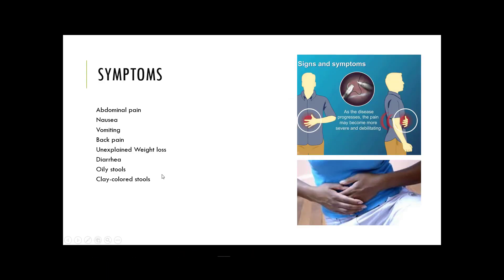The most common symptom of pancreatitis is upper abdominal pain. In fact, pain is the overriding symptom for 85-90% of people with chronic pancreatitis. This pain can be constant or occur in week-long episodes and is often associated with nausea and vomiting. For many people, it spreads to the back and worsens after eating or drinking, potentially causing them to fear eating and drinking, resulting in weight loss.